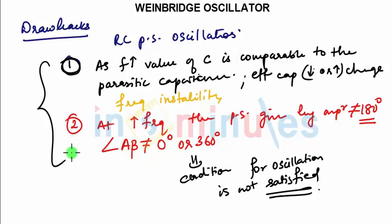Because of these drawbacks, RC phase shift oscillators are not used at higher frequencies. These drawbacks are removed by LC oscillators, so LC oscillators are used for high frequency applications.